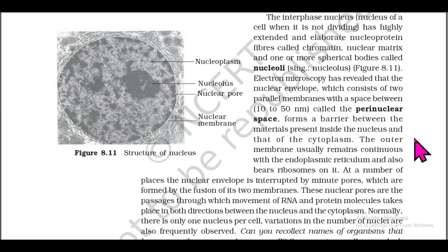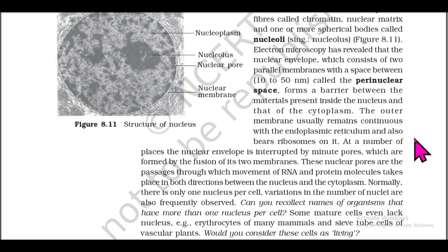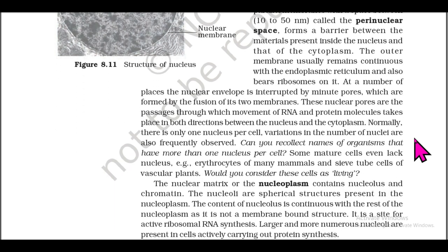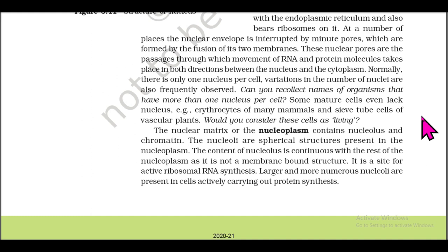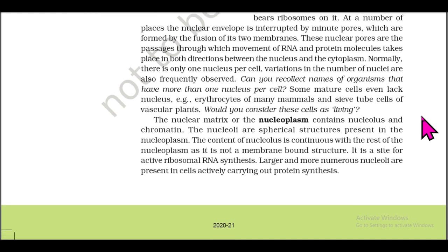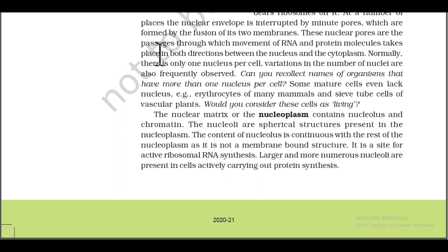The outer membrane usually remains continuous with the endoplasmic reticulum and also bears ribosomes on it. At a number of places, the nuclear envelope is interrupted by minute pores formed by the fusion of two membranes — these nuclear pores are the passages through which RNA and protein molecules move in both directions between the nucleus and the cytoplasm. Normally there is only one nucleus per cell, though variations in number are also observed. Can you recollect names of organisms that have more than one nucleus per cell?